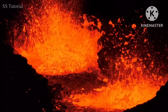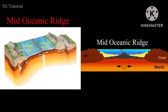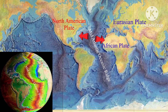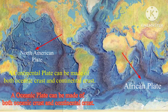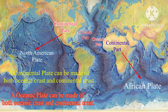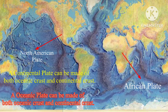Earthquakes and volcanic eruptions are common here. If divergence occurs in the ocean between two oceanic crusts, then an oceanic ridge forms. You can see an oceanic ridge in the Atlantic Ocean where the North American plate is moving apart from the African plate and Eurasian plates. Here we should remember that though all these plates are continental plates, the parts which are diverging are made of oceanic crust.